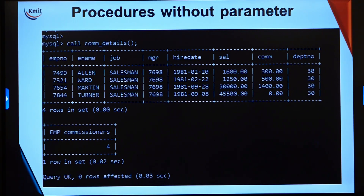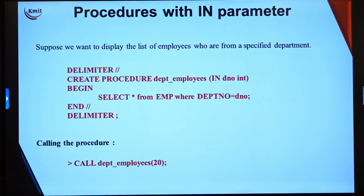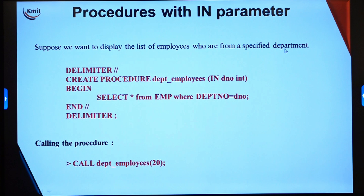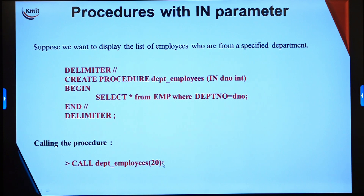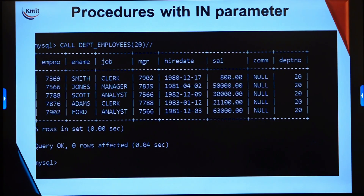Now, for a procedure with an IN parameter: IN is used for getting a value from the calling statement, where the argument is passed along with the procedure call. The example displays the list of employees from a specified department. The department number is the input, and based on it, those employees' details are displayed. So: CREATE PROCEDURE department_employees with parameter DNO of integer type as an IN parameter, then SELECT * FROM EMP WHERE DEPTNO = DNO. We call it as: CALL dept_employees(20).